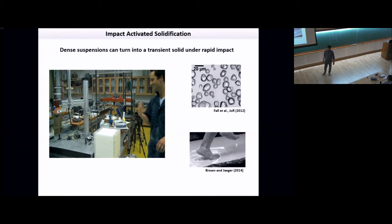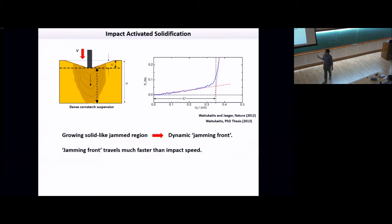This substance turns into a transient solid under impact, and it was termed impact activated solidification. This phenomenon was explained by my advisor and a grad student in 2012. This yellow colored substance is a cornstarch suspension kept in a container. If you have a metal rod coming down at a velocity V, what they found is there is a growing solid-like region underneath, which propagates and expands very rapidly and quickly reaches the solid boundary of the container.